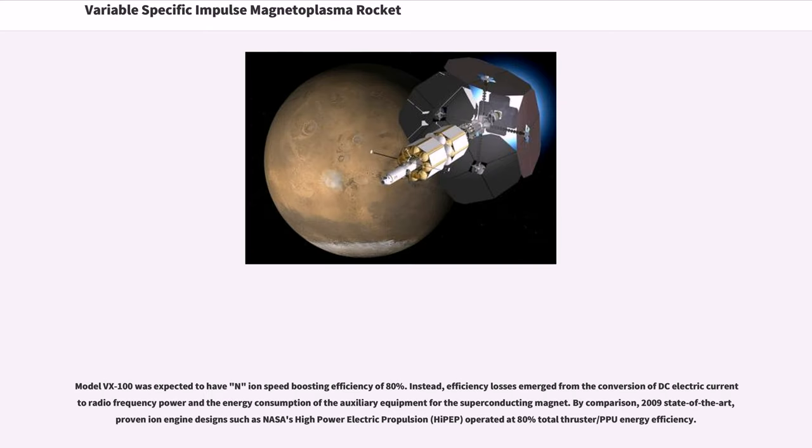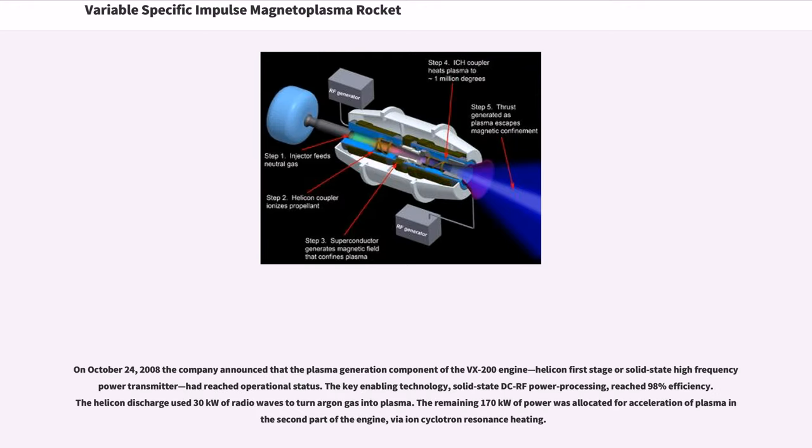Model VX-100 was expected to have an ion speed boosting efficiency of 80%. Instead, efficiency losses emerged from the conversion of DC electric current to radio frequency power and the energy consumption of the auxiliary equipment for the superconducting magnet. By comparison, 2009 state-of-the-art proven ion engine designs such as NASA's high-power electric propulsion operated at 80% total thruster PPU energy efficiency.